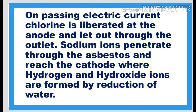When current is passed through the brine solution, electrolysis starts. Chlorine will be liberated at the anode, and the sodium ions penetrate through the cathode and reach its surface. On the surface of the cathode, water undergoes reduction and hydrogen and hydroxide ions are formed.